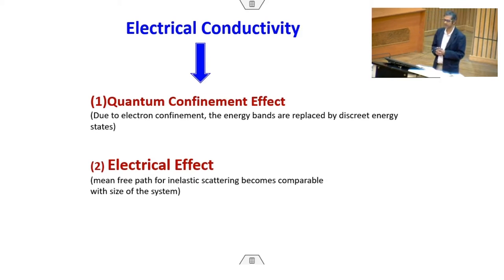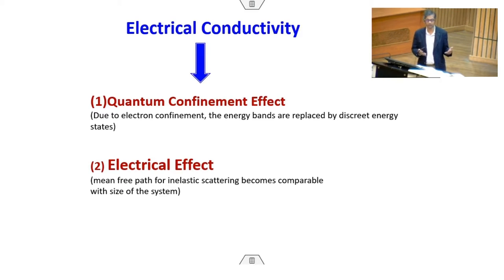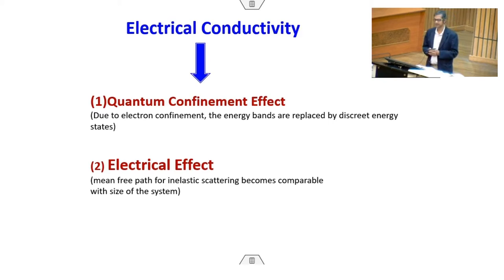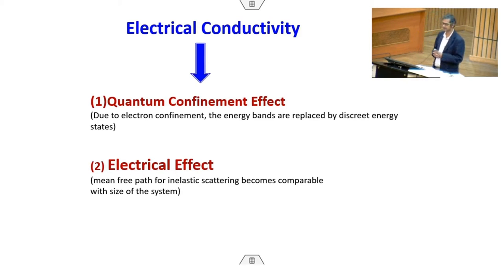Two important aspects of electrical conductivity are: first, quantum confinement effects, which arise from electronic energy or state confinement, meaning energy bands are replaced by discrete energy states at the nanoscale. Second, the electrical effect where the mean free path of elastically scattered electrons becomes comparable to the size of the system — if grain size is comparable to the mean free path, electrons are not scattered much and conductivity increases.